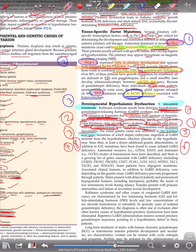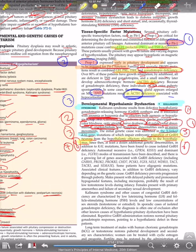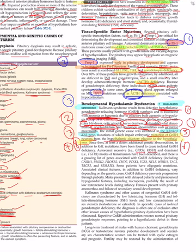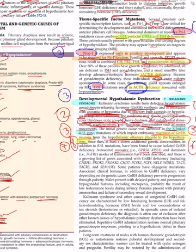KAL gene mutations impair the embryonic migration of GnRH neurons from the hypothalamic olfactory placode to the hypothalamus — it is fundamentally a problem of migration of GnRH neurons. Since then, at least a dozen additional genetic abnormalities beyond the KAL mutation have been identified, including autosomal recessive GPR54 and KISS1, and dominant FGFR1. Some patients have oligogenic mutations; associated clinical features vary depending on the genetic cause.